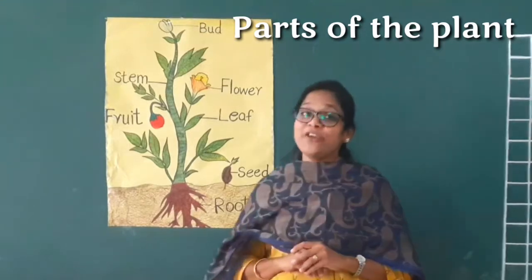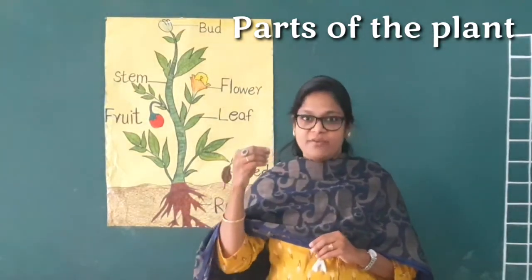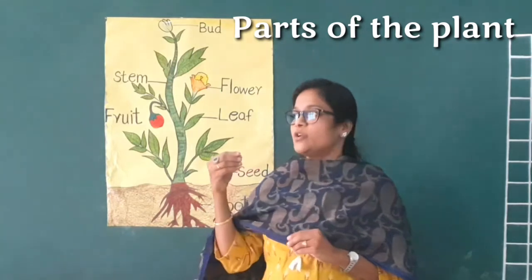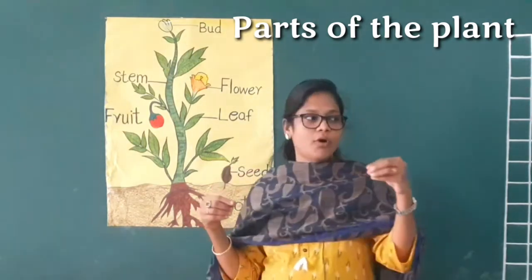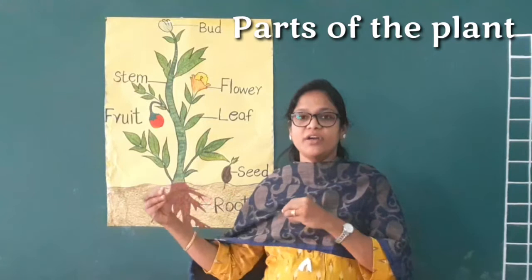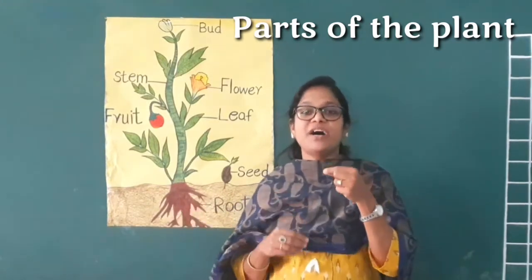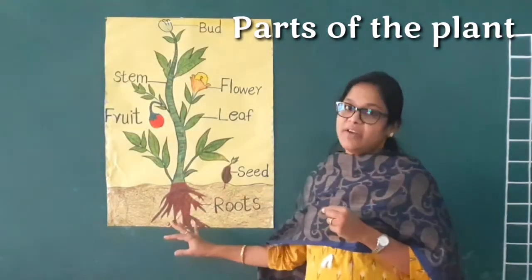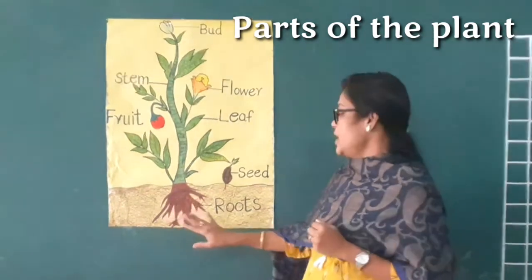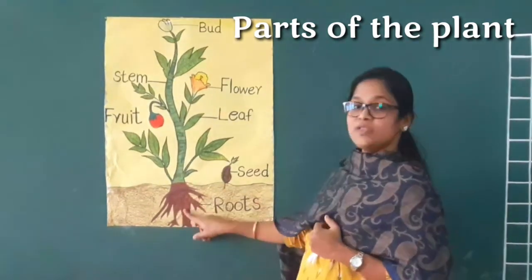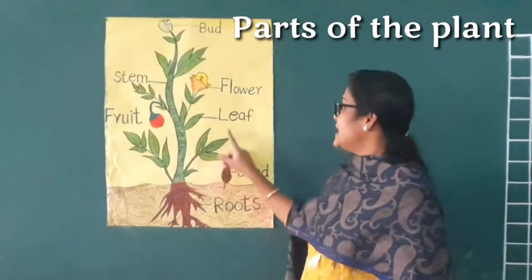To identify the parts even better, you could take a real plant. You shouldn't pluck plants, but if you have a small plant found near your home, you can use it to identify the parts very easily. Come on, say it after me: roots, stem, leaf, bud, flower, fruit.